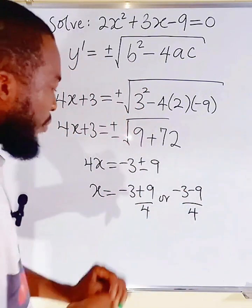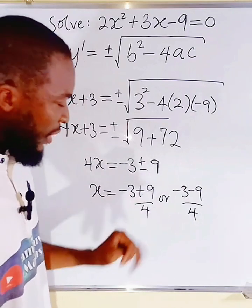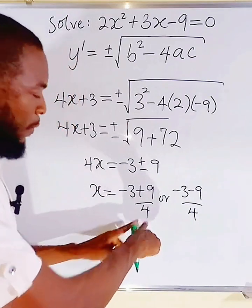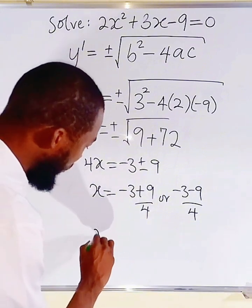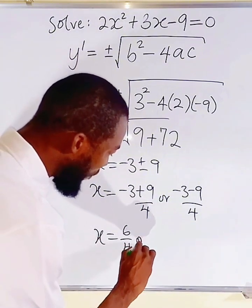So, let's simplify this separately. Minus 3 plus 9 will give us positive 6. And we have 6 divided by 4. So, this is 6 divided by 4, which can be reduced to the lowest term.